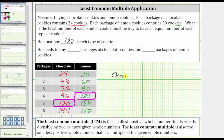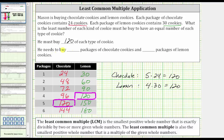For the chocolate cookies, we obtained 120 by multiplying five and 24 — five times 24 equals 120. And for the lemon cookies, to get 120, we multiplied four and 30. So Mason needs to buy five packages of chocolate cookies to get 120 chocolate cookies, and he needs to buy four packages of lemon cookies to get 120 lemon cookies.